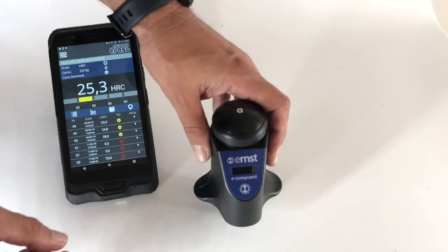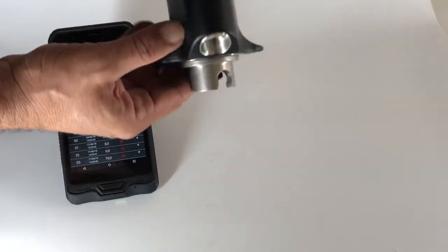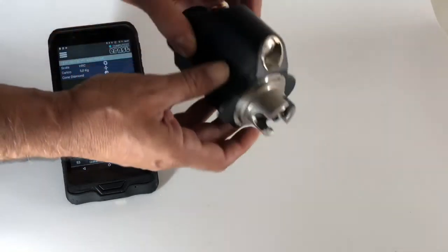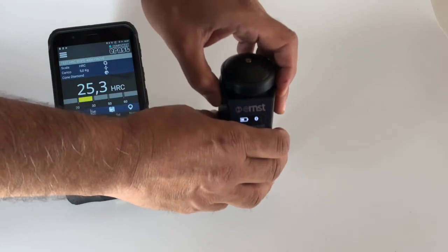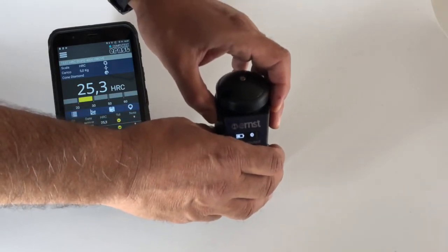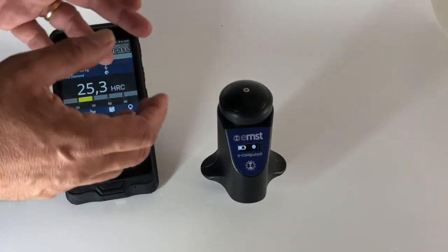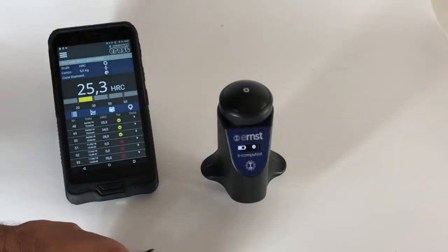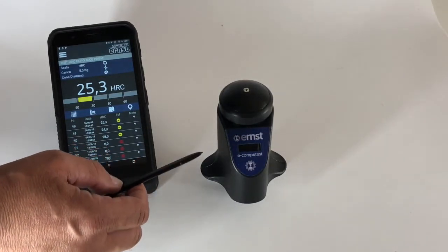You can use the instrument and you can test and measure in all directions. So you can measure upside down, you can measure in this direction, in this direction. So there is no problem even if you have a difficult sample, difficult to reach, then you can measure the way you prefer and it's more easy for you.